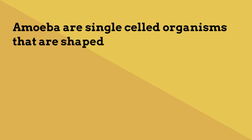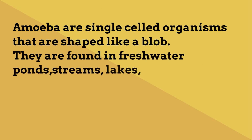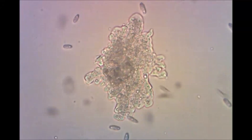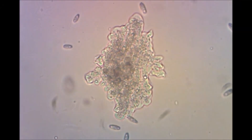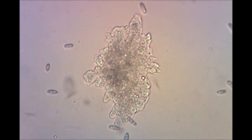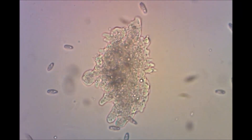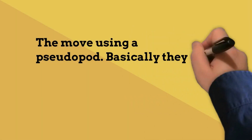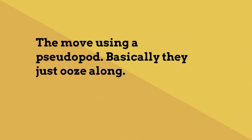Amoeba are single cell organisms that are shaped a bit like a blob. They are found in freshwater ponds, streams, lakes, and even in salt water. They move using a pseudopod — basically they just kind of ooze along.